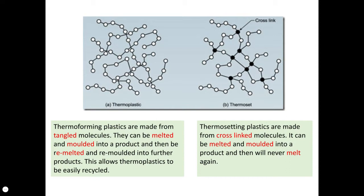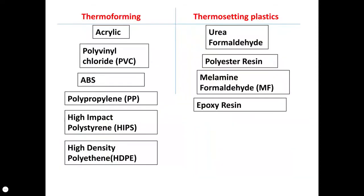So there are two types of plastic. A thermoforming plastic, commonly known as a thermoplastic, can be melted and remoulded over and over again. A thermosetting plastic, once formed into shape, can never be remoulded again. These are the types of plastics you'll need to know for your GCSE.